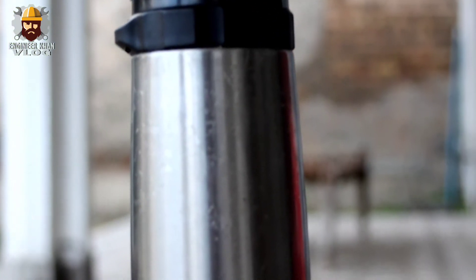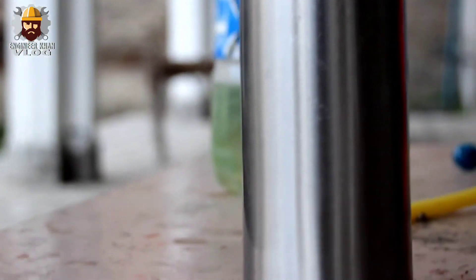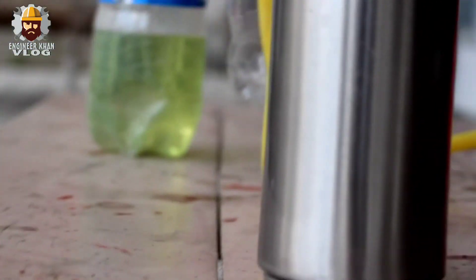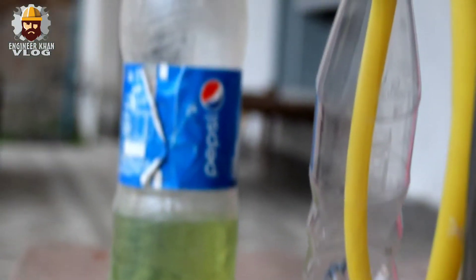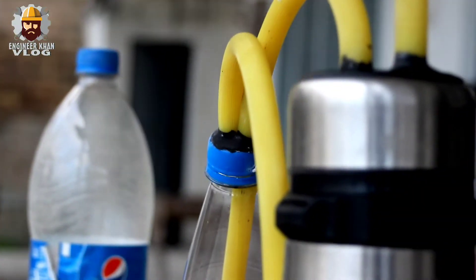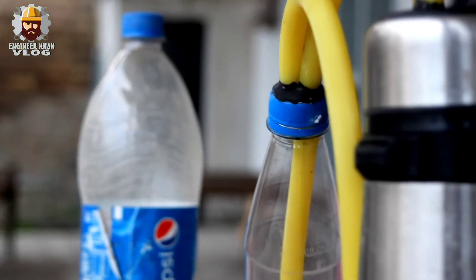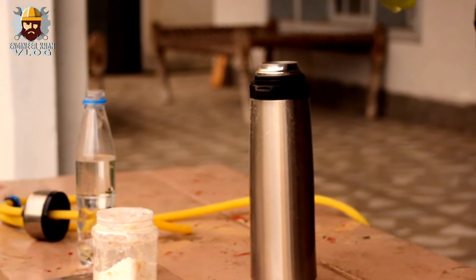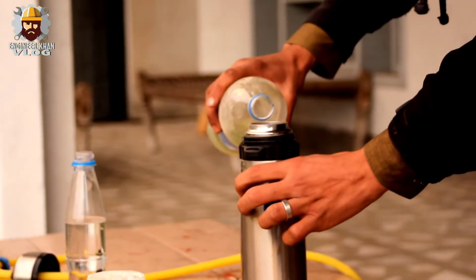These bubbles are collected by the second pipe, which starts from the lid of the first container and goes to the bottom of the second container filled with baking soda mixed with water to prevent backfire. Let's begin the process.